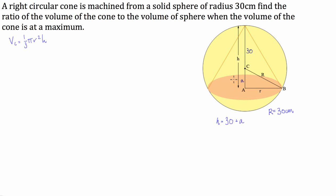We also know that we can work out r squared by using Pythagoras. So r squared, or this side of the triangle, is equal to big R squared — that's CB, the radius of the sphere, which is 30 squared — subtract A squared.